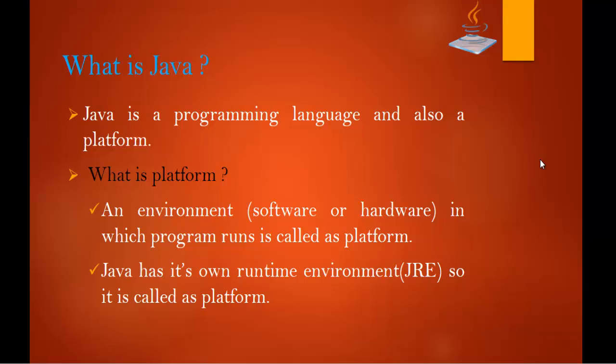It can be a software environment or a hardware environment in which the program runs. Java has its own runtime environment — the Java programming language has its own runtime environment called JRE, that is Java Runtime Environment. So we can call the Java programming language a platform too. That is what is Java and why Java is called a platform.